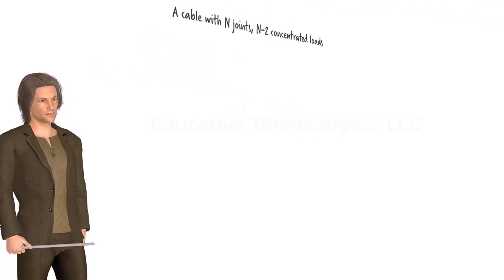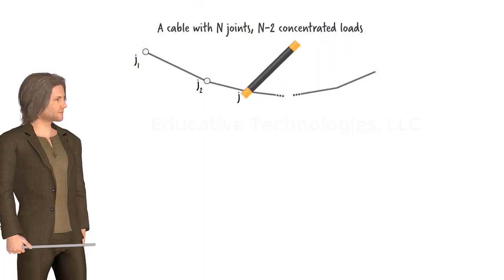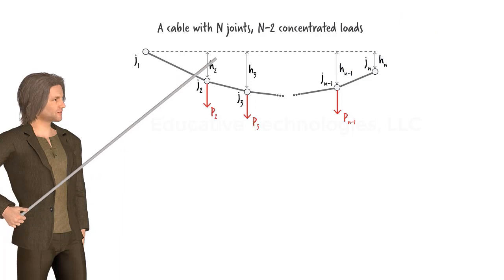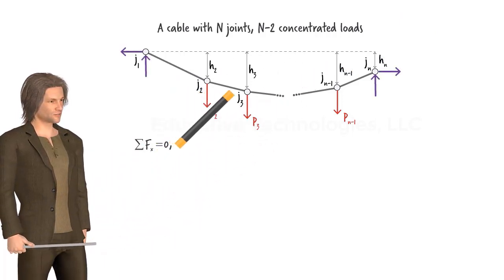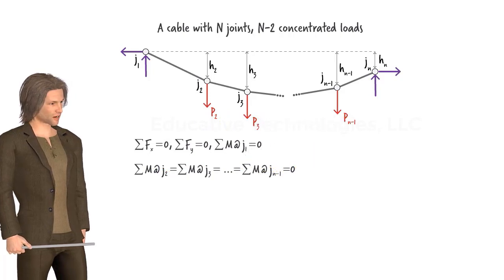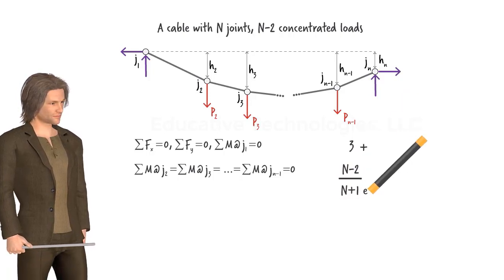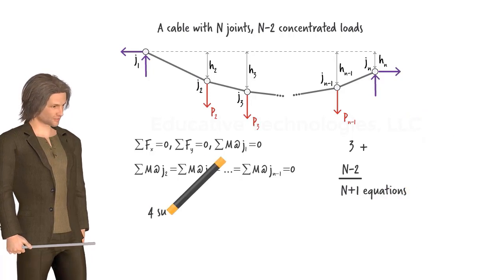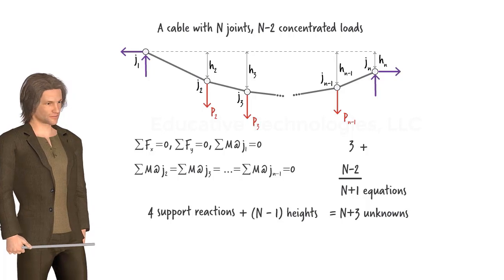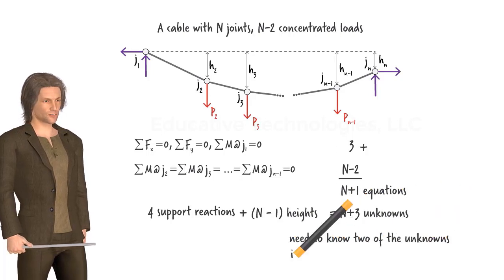To summarize: given a cable system with N joints and N minus 2 concentrated loads positioned at heights H2 through H(N−1), we can write three equilibrium equations for the system as a whole. We can also write one equilibrium equation for each interior joint — since there are N minus 2 such joints, we end up with N plus 1 equations total. The cable system has four support reactions and N minus 1 unknown heights, giving up to N plus 3 unknowns. Since the number of equations is 2 fewer than the maximum number of unknowns, we need to know two of the heights in order to determine the rest.